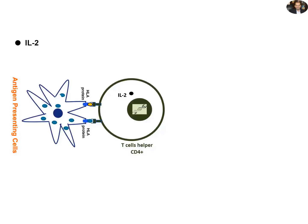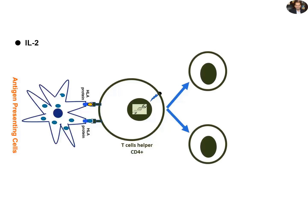This activation results in production and release of cytokines, IL-2, which have autocrine effects, as they come back to bind and activate their releasing T helper cells. IL-2 induces T helper cell proliferation into two cellular lines: T helper 1, abbreviated as Th1, and T helper 2 cells, abbreviated as Th2.